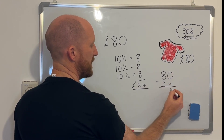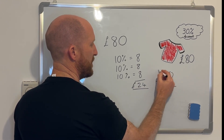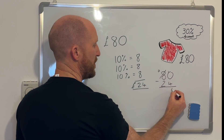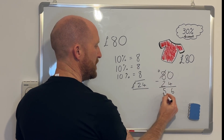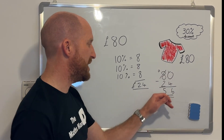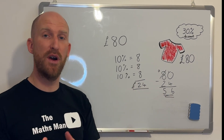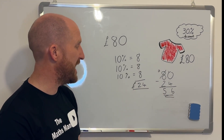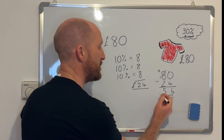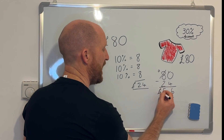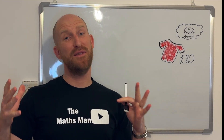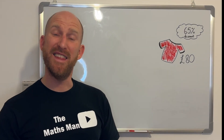To find the new price of the Manchester United jersey, I take 80 and subtract the discount of 24. The new price of the Manchester United jersey is £56 after the 30% discount.